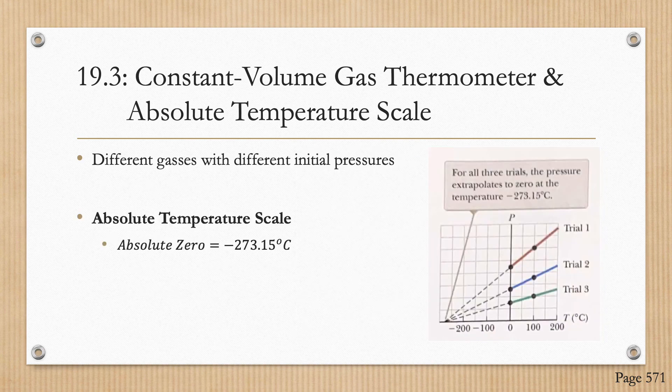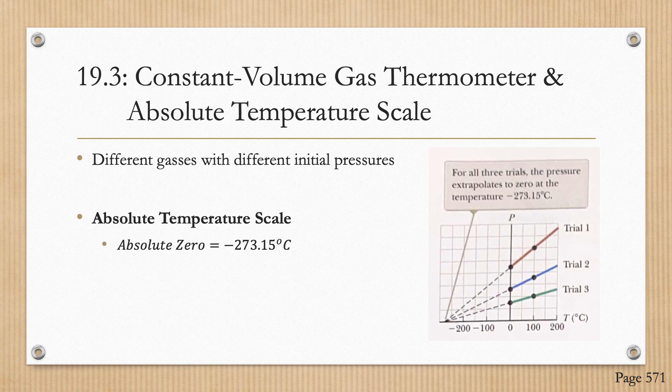This graph now shows three different gases with different initial pressures, all plotted on the same graph. Interestingly, if you extend the straight lines toward negative temperatures, in every case — trials one, two, and three — the pressure reaches zero when the temperature is negative 273.15 degrees Celsius. This temperature is used as the basis for the absolute temperature scale, which sets negative 273.15 degrees Celsius as its zero point. This temperature is also referred to as absolute zero.